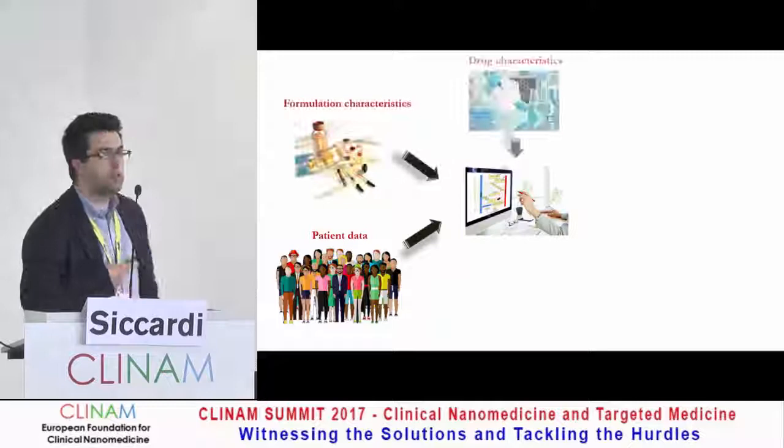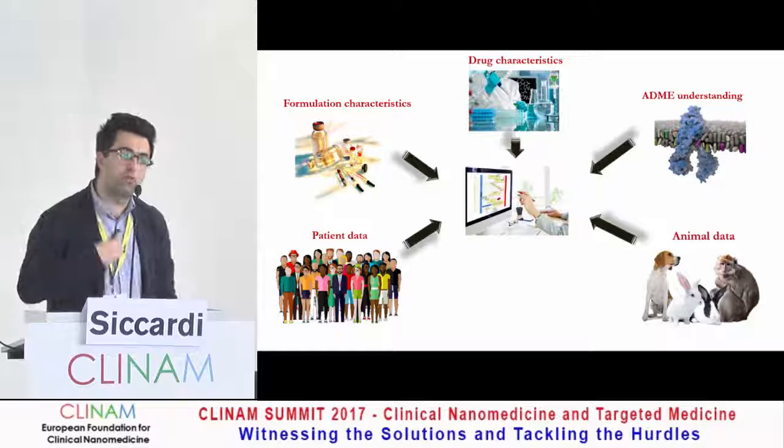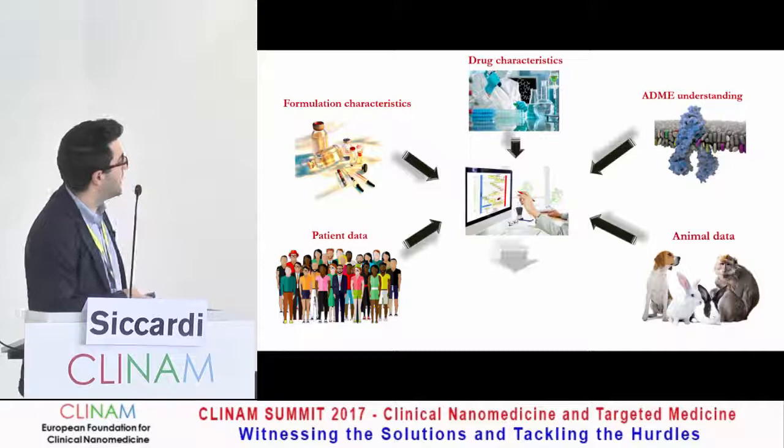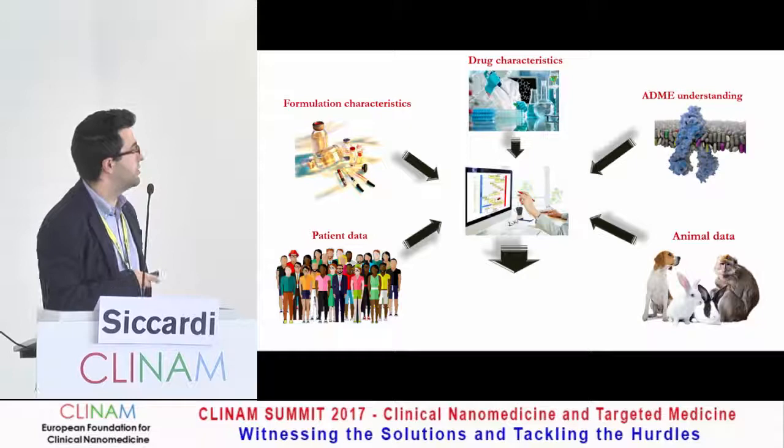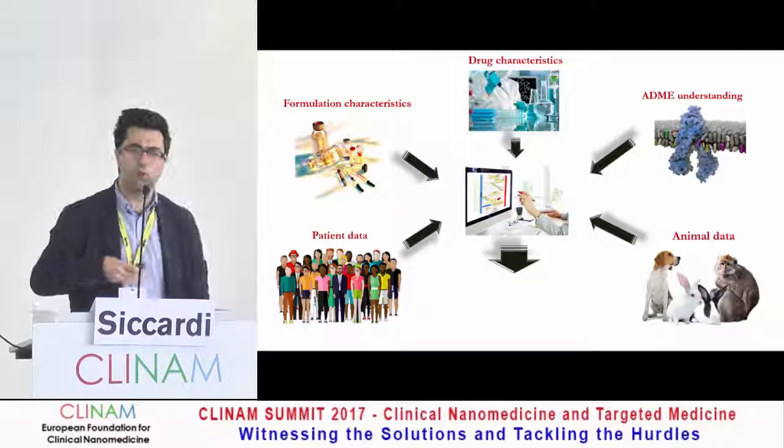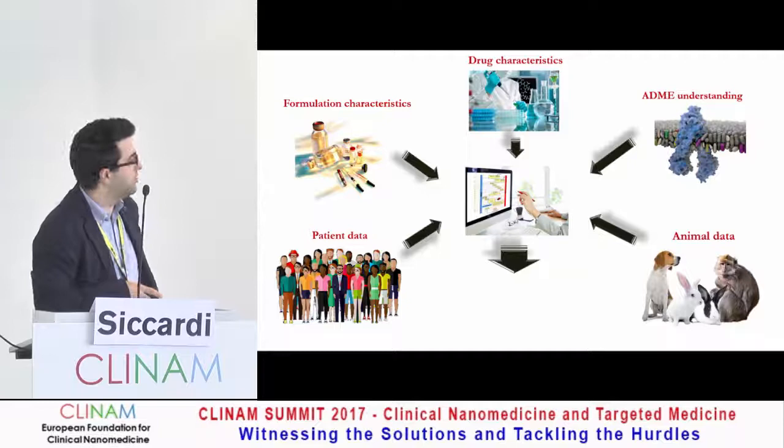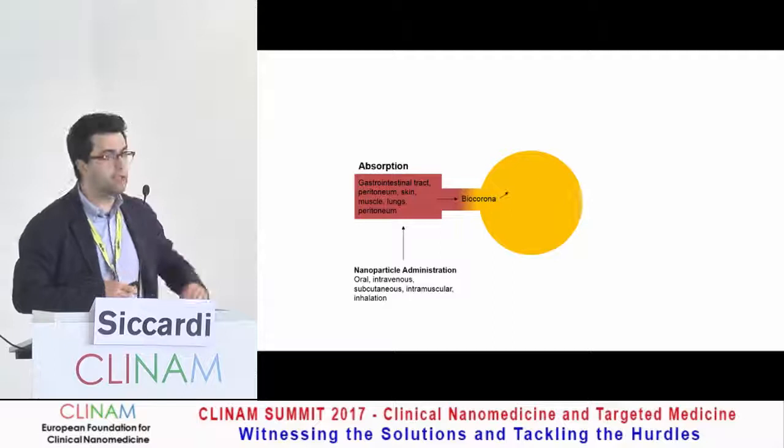First of all, I would like to start from what physiologically-based pharmacokinetic modeling is. It's nothing else than a flexible computational platform in which we can integrate a variety of different data to predict distribution of small molecules or nanoparticles. We can integrate data describing physiological and anatomical features of patients, characteristics of the formulation APIs, as well as our understanding of absorption, distribution, metabolism, elimination, as well as animal data. The core of our models is a mechanistic description of biodistribution.